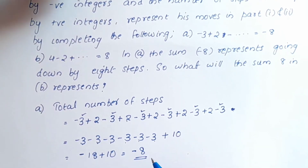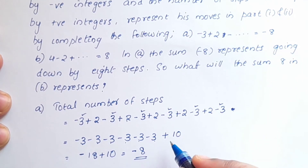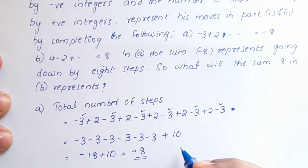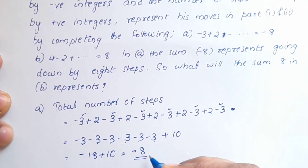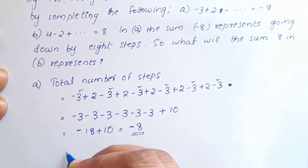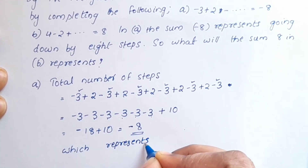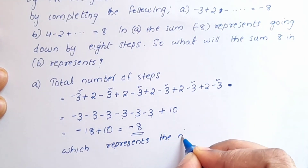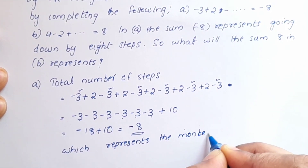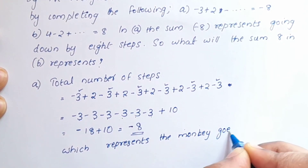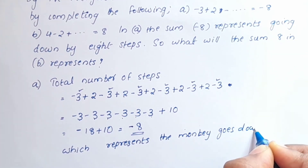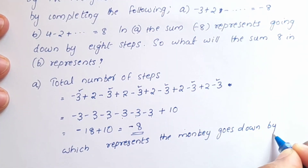The answer is negative 8, which represents the monkey going down by 8 steps from the 1st step to the 9th step — a net movement downward of 8 steps.